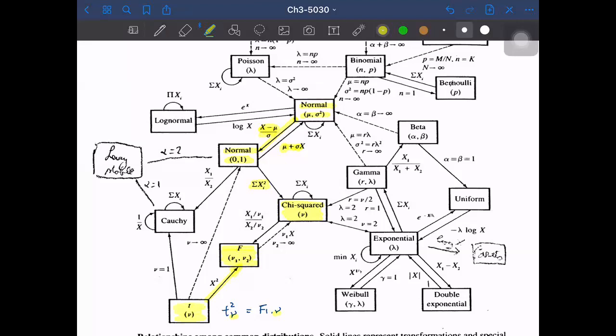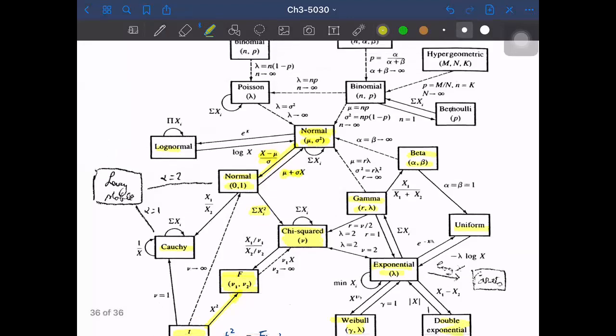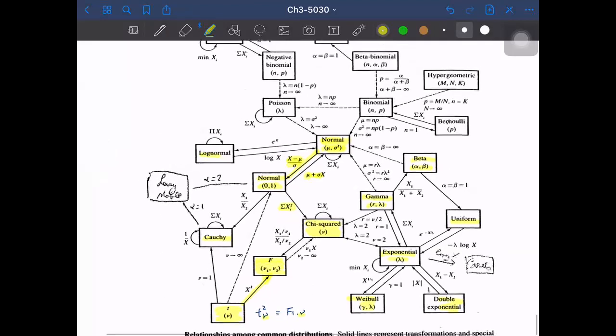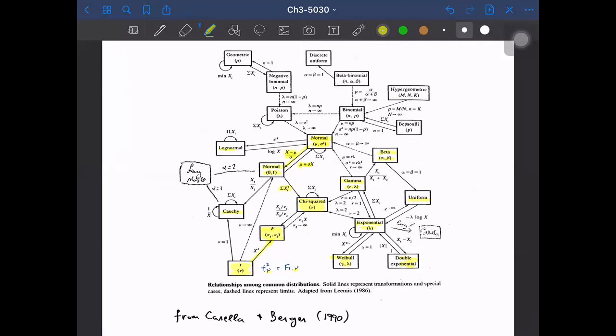Some other famous distributions are here, such as Cauchy or log-normal or gamma distribution, beta distribution, uniform exponential, Weibull, and double exponential. If you see this map, you can see how distributions and random variables are constructed from more basic random variables. Okay, so this is the end of chapter three.